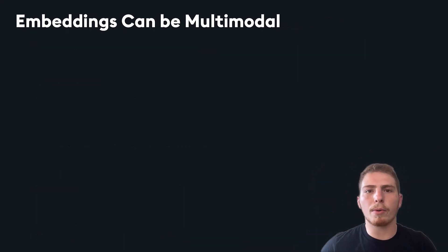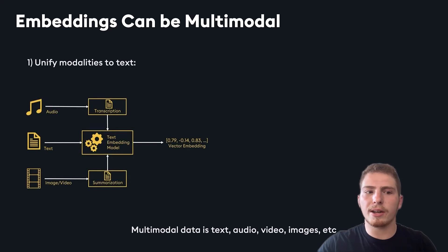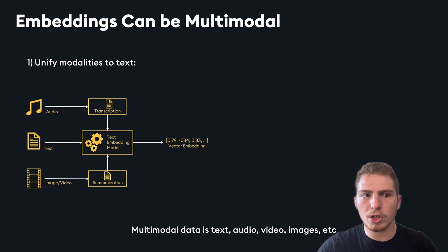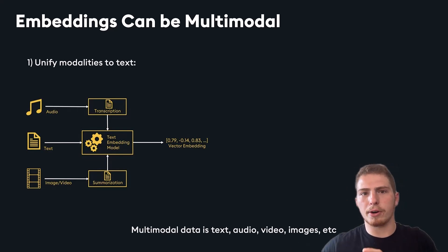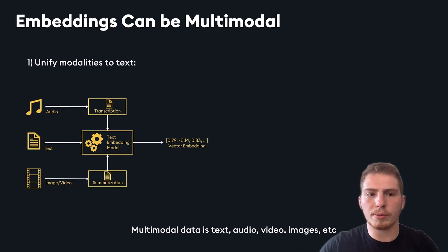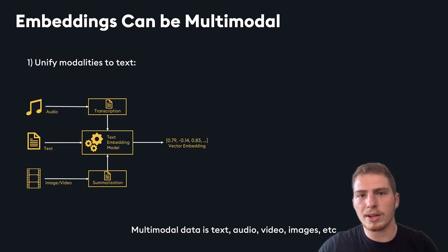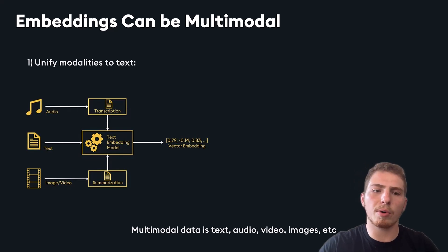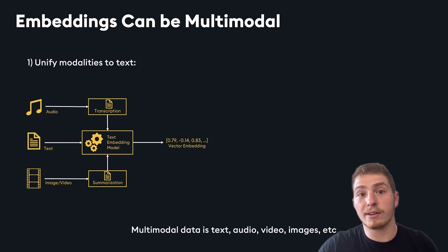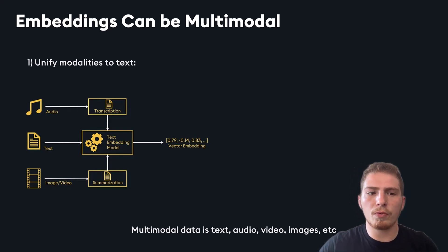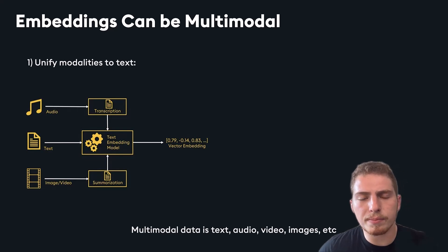Embeddings can be multimodal. If you have data in the form of audio, text, and images, you could unify those modalities to text: take audio and turn its transcription into vectors, use the same text embedding model on text, and summarize a video to do the same. This way, you've used the same embedding model for all of your data, which makes it very easy to manage in practice.